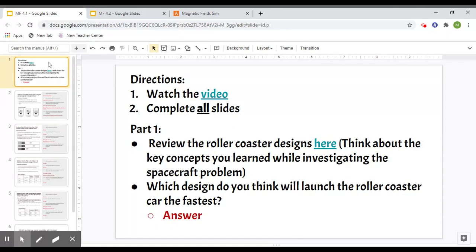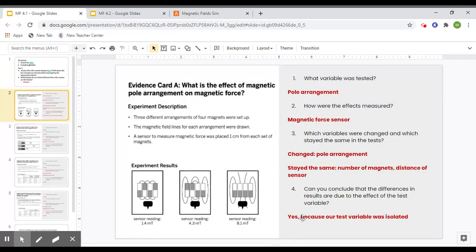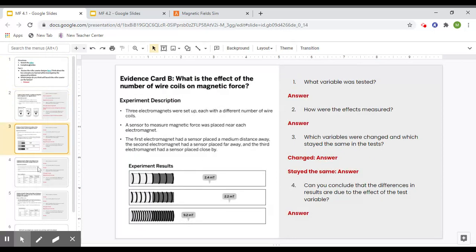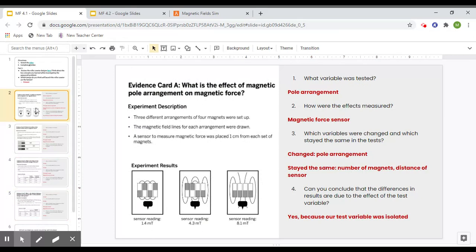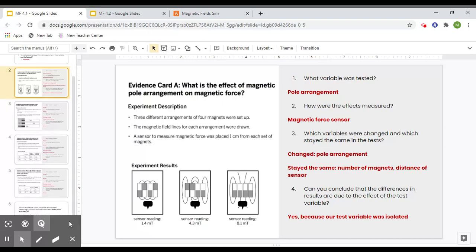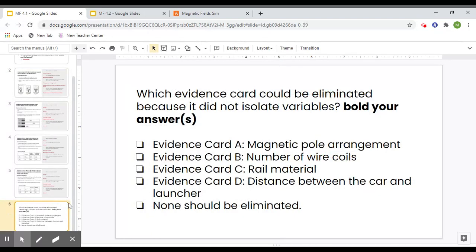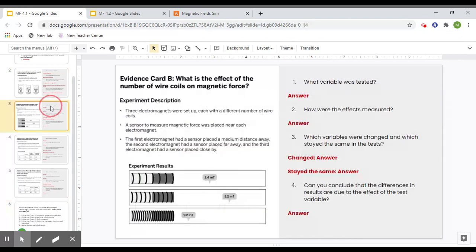This lesson you had to look at each experiment and each evidence card and see if it was a valid experiment or not, see if the test variable was isolated. So in this lesson I did go and do evidence card A for you so you could watch this one and have an example of what I was looking for.